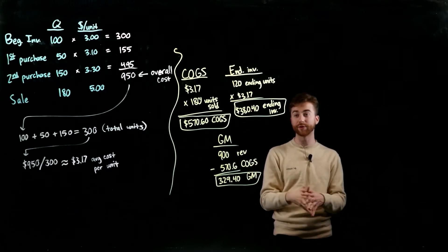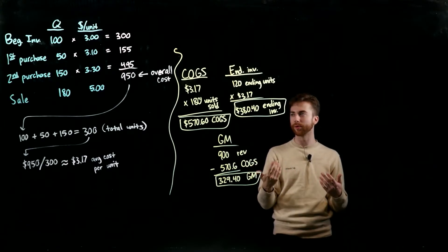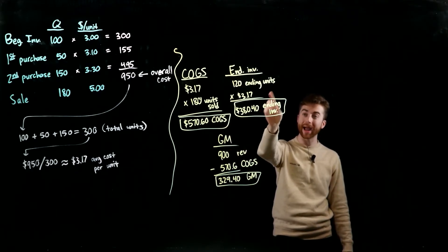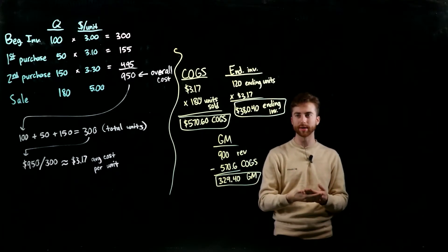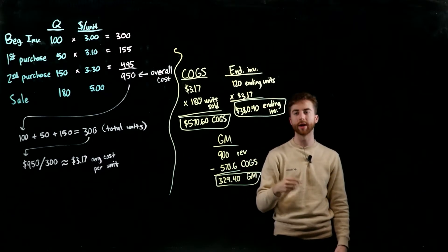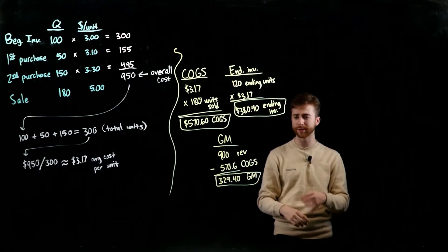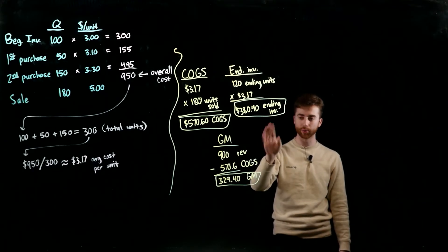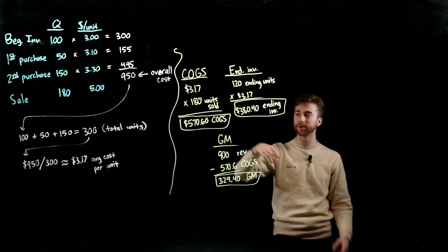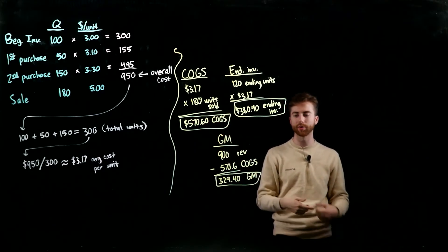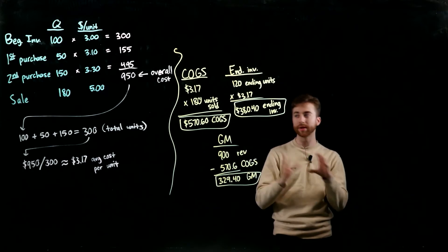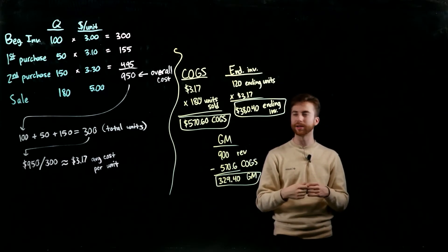For ending inventory under weighted average: 300 total units minus 180 sold = 120 remaining units × $3.17 average cost = $380.40 ending inventory. For gross margin: revenue = 180 units × $5.00 = $900; minus COGS of $570.60 gives your gross margin. So across all three methods, only the cost valuation differs, not the revenue.